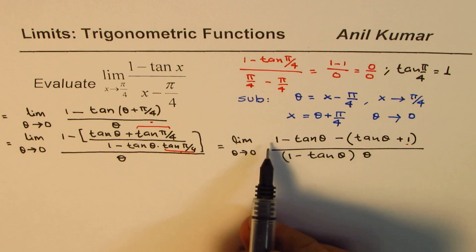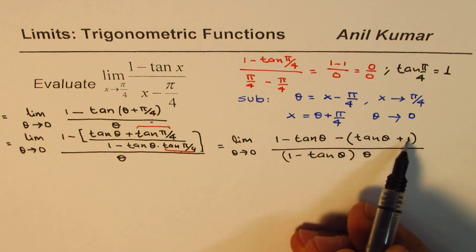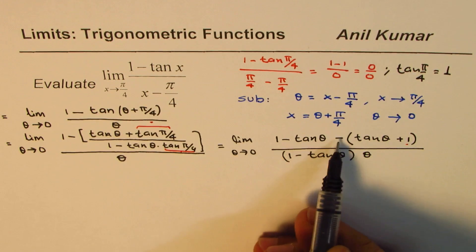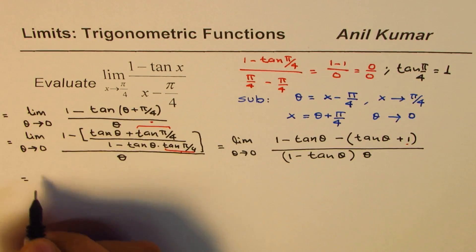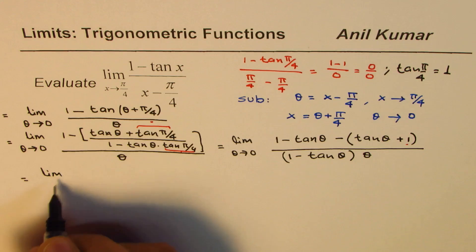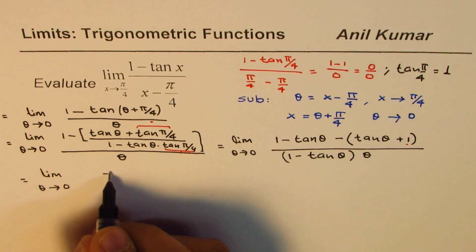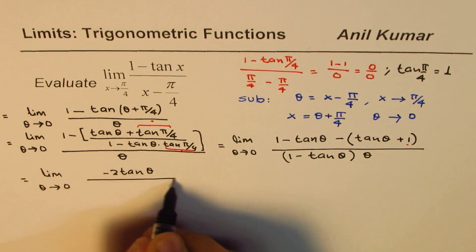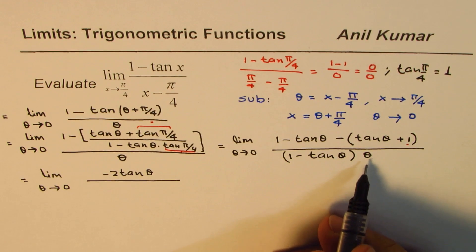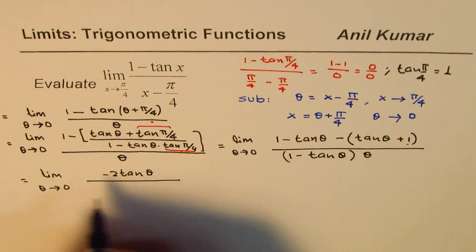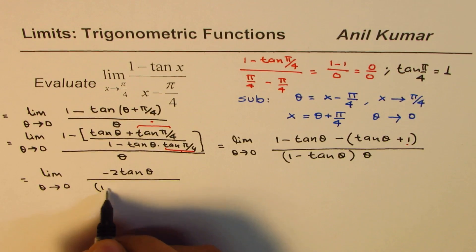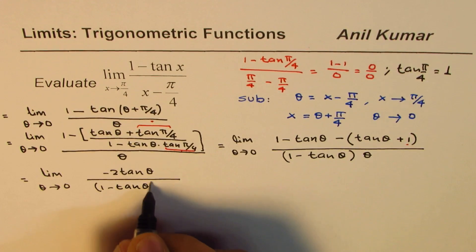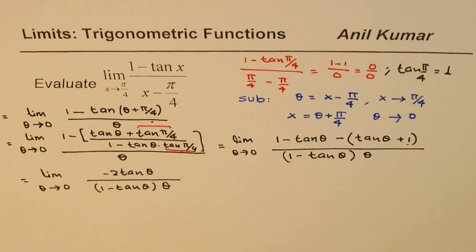In the numerator, 1 - 1 = 0, and -tan θ - tan θ = -2 tan θ. So we get: limit as θ approaches 0 of (-2 tan θ) divided by [θ · (1 - tan θ)].